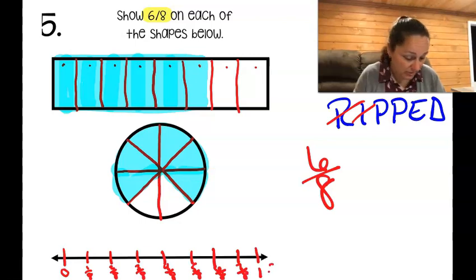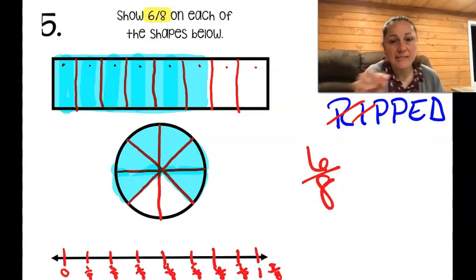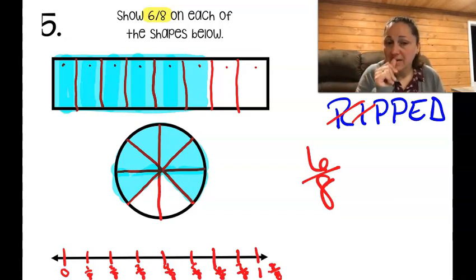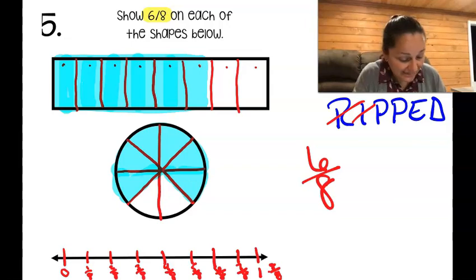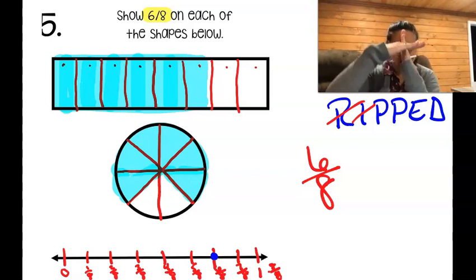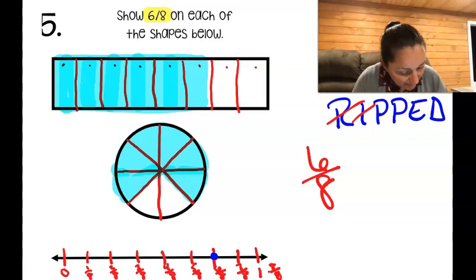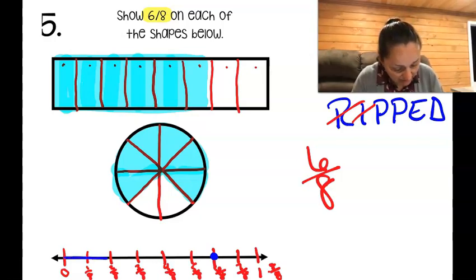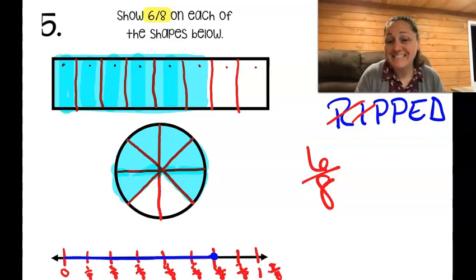Let's check: this would be one-eighth, two-eighths, three-eighths, four-eighths, five-eighths, six-eighths, seven-eighths, and one equals eight-eighths. Now it says show six-eighths on each shape. On the bar I shade it in, on the circle I shade it in, and on the number line I put a plot mark — a dot — right at six-eighths where the line and the tick mark cross, like a bullseye.